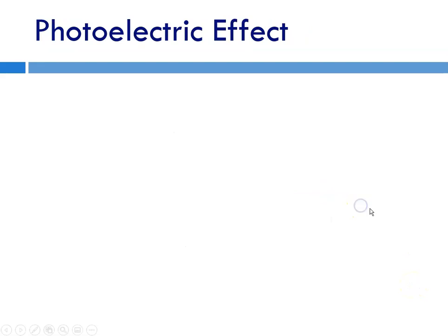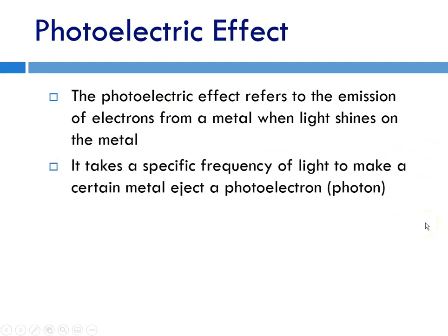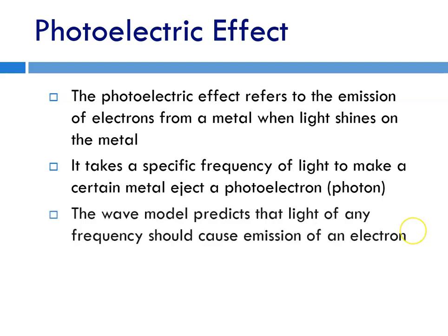Scientists had observed something called the photoelectric effect. It was the emission of a stream of light, electrons, from a metal when light shines on it. What they observed was that it took a specific frequency of light to make each metal eject a photoelectron, or eject light. The wave model would predict that any light, any frequency, should cause the same effect in metals, and it was not the case. It didn't fit the wave model. Scientists were trying to figure out what was going on with this photoelectric effect.